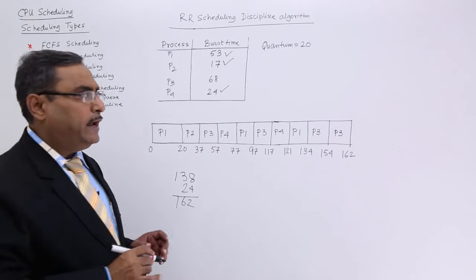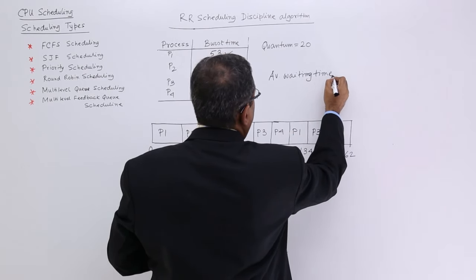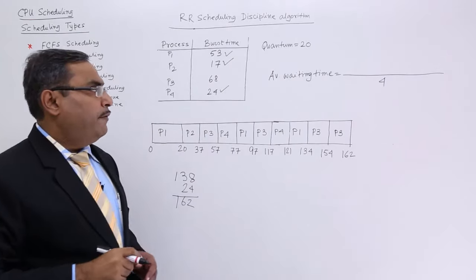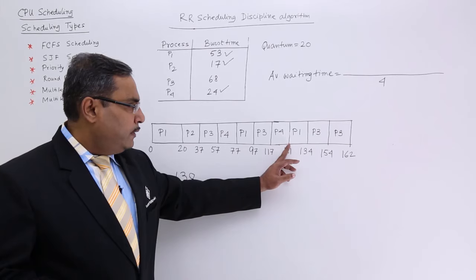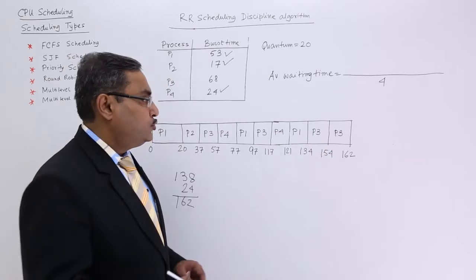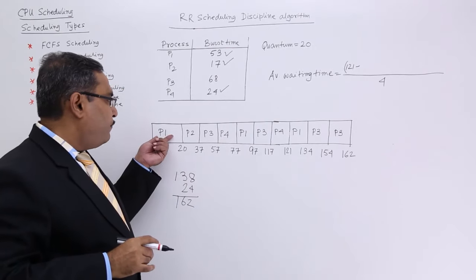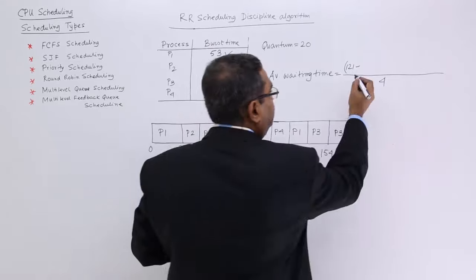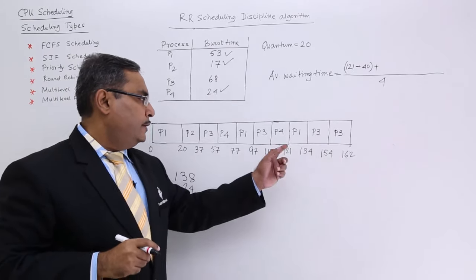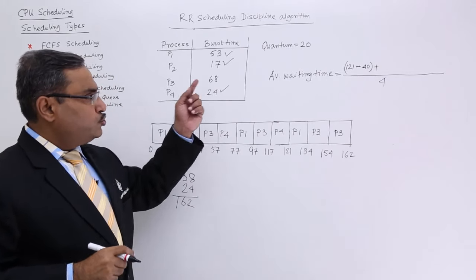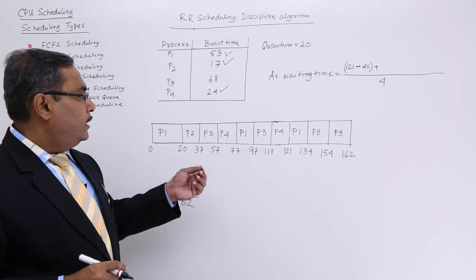Now let me go for the average waiting time calculation. So average waiting time. How to calculate average waiting time? At first, I shall go for P1. You see, P1 after 121 instant of time, P1 need not to wait. So I shall take 121. And prior to that, it is having 20 plus 20, 40 units was used for P1 only. So minus 40. So P1 after 121, P1 need not to wait. Prior to that, P1 utilizes CPU for 40 units of time. So 121 minus 40. Considering all the arrival times are at 0, all the processes are available at the initial instant. Now I shall go for P2. So P2 is having after 20 units of time, P2 need not to wait. So P2 is having 20.